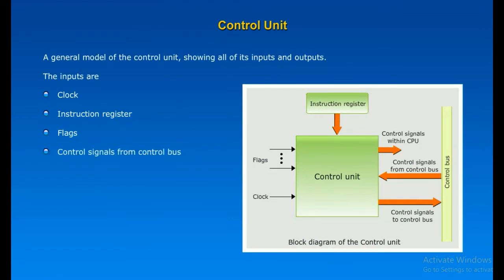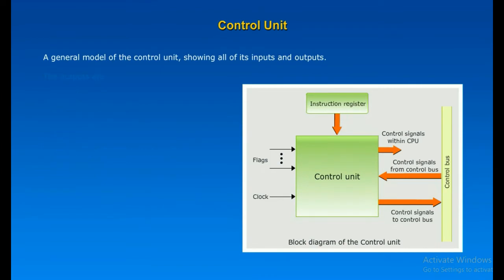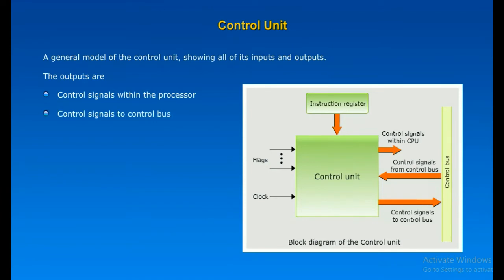Control signals from the control bus: the control bus portion of the system bus provides signals to the control unit. The outputs are of two types: those that cause data to be moved from one register to another, and those that activate specific ALU functions. Control signals to the control bus are also of two types: control signals to memory and control signals to the I/O modules.